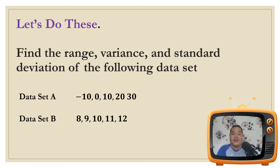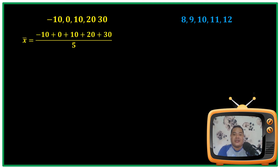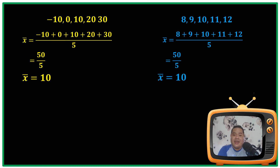Let's do this activity. Find the range, variance, and standard deviation of the following data sets. Data set A is: −10, 0, 10, 20, 30. Data set B is: 8, 9, 10, 11, and 12. Notice that the mean of both data sets is 10, but as you can see, the first data set is more dispersed than the second one. Therefore we need to compute the measures of dispersion to describe them individually.